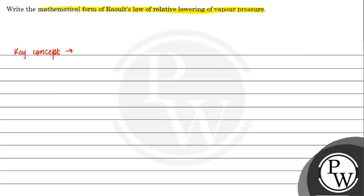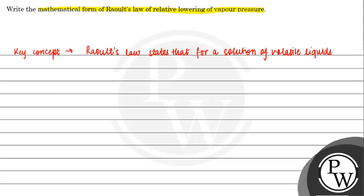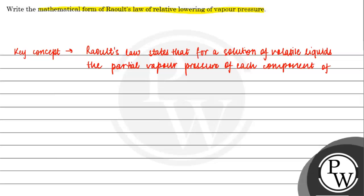Key concept. Raoult's law states that for a solution of volatile liquids, the partial vapor pressure of each component of the solution is directly proportional to its mole fraction present in the solution.